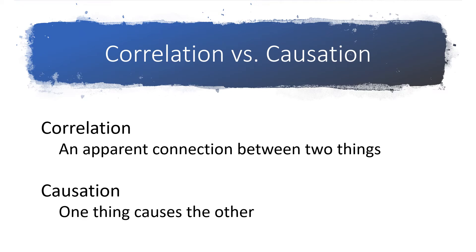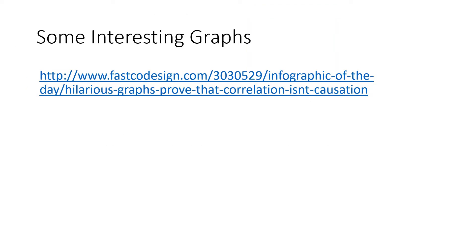Causation means that one thing is directly responsible for causing the other thing, and correlation and causation are often confused, which can lead to all sorts of errors. Take a moment and explore the link provided — it will show you things that are clearly correlated where one clearly does not cause the other.